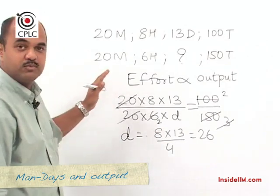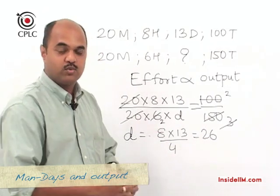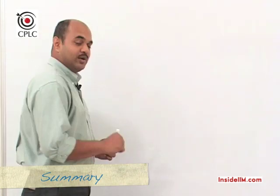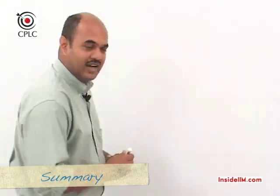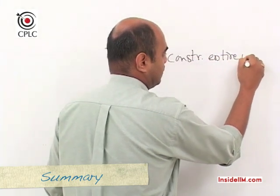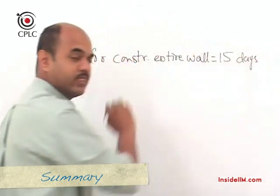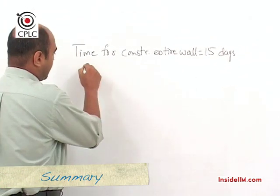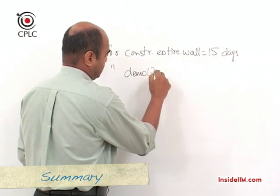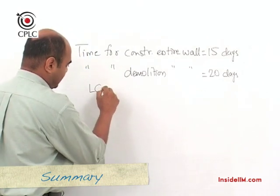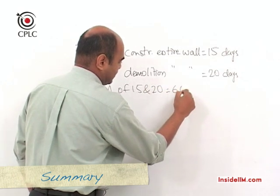This shows how the man-days concept extends to output — whatever is being produced. Now for the wall construction problem, we use the units method. The time to construct the entire wall is 15 days, and if the people demolishing started with a full wall, the time for demolition of the entire wall would be 20 days.